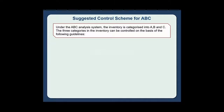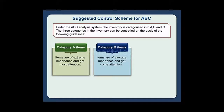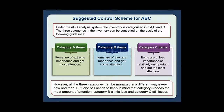Under the ABC analysis system, the inventory is categorized into A, B, and C. The three categories can be controlled on the basis of the following guidelines: Category A items are of extreme importance and get the most attention. Category B items are of average importance and get some attention. Category C items are of less importance or relatively unimportant and get the least attention. However, all three categories can be managed in a different way every now and then, but one still needs to keep in mind that Category A needs the most attention, Category B a little less, and Category C still lesser.